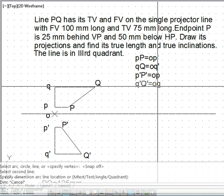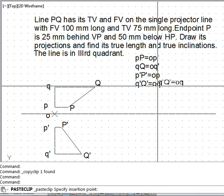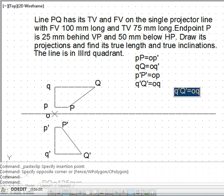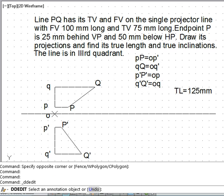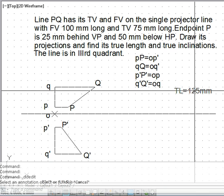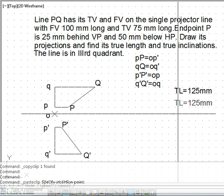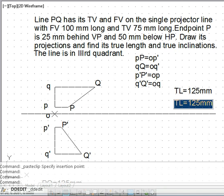So we can write here the answer. The answer is we simply copied. First of all one answer is true length is equal to 125 mm. And in addition the phi which we measured, that is 37 degrees.